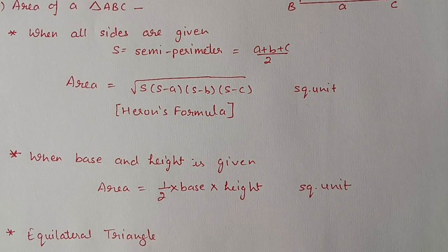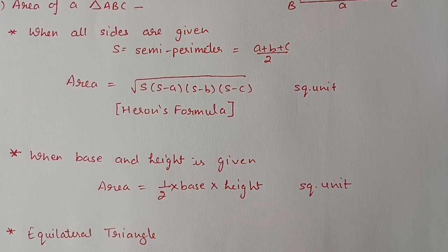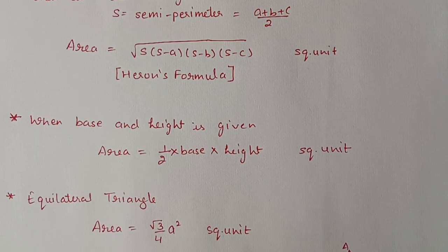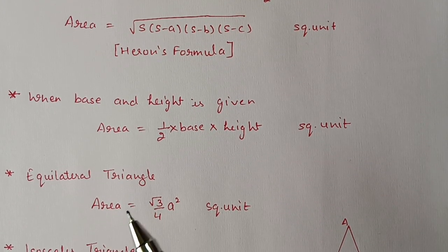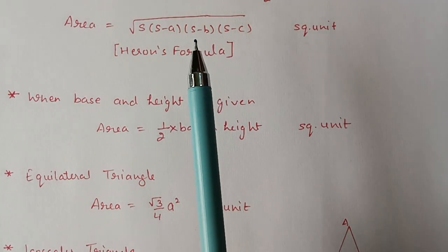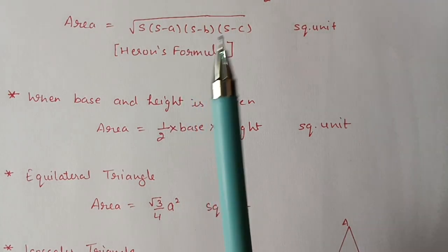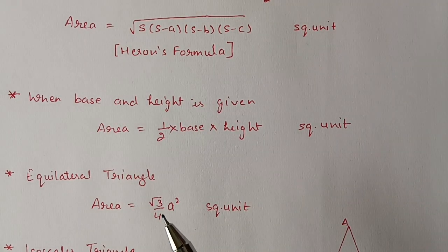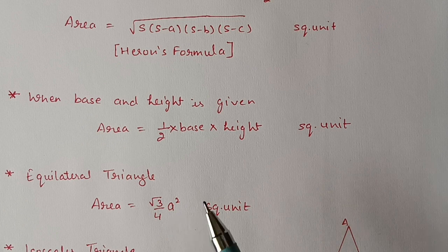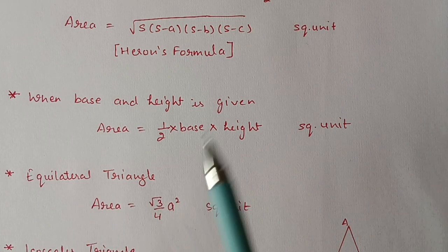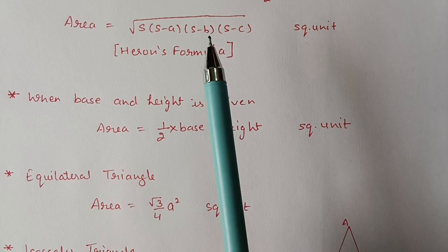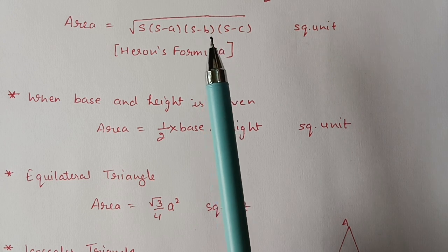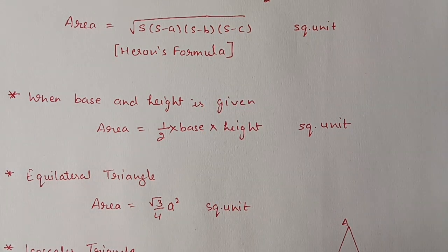The third case is when an equilateral triangle is given. For an equilateral triangle, either you can use Heron's formula or you can use directly the formula: area = (√3/4)a². This formula is derived from Heron's formula only, after substituting all three sides as equal.